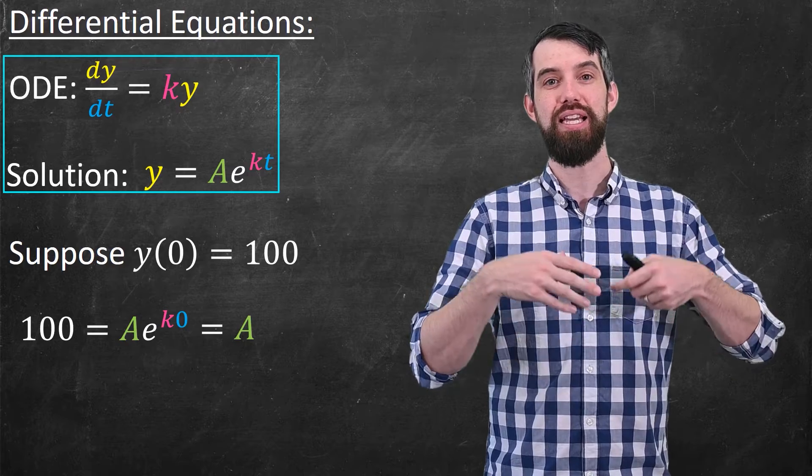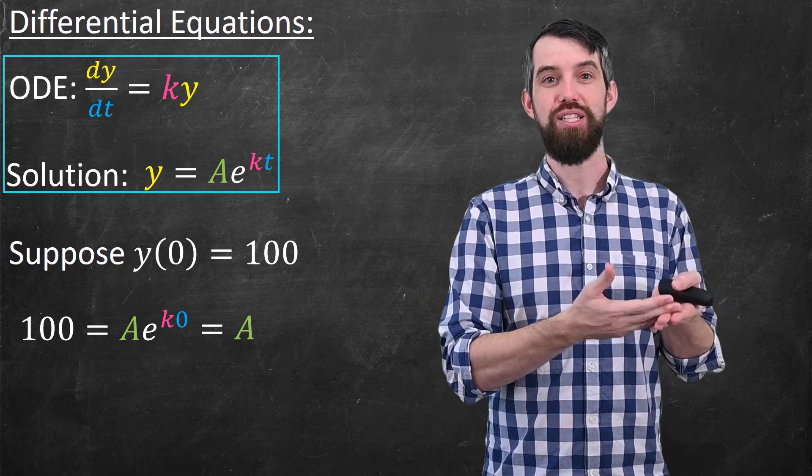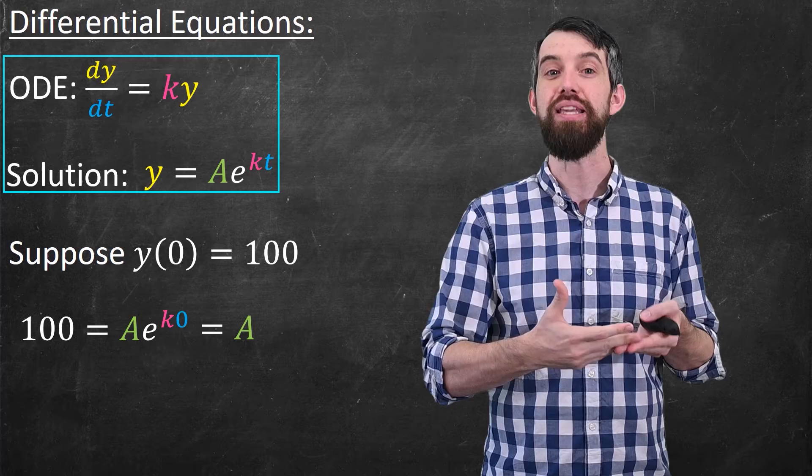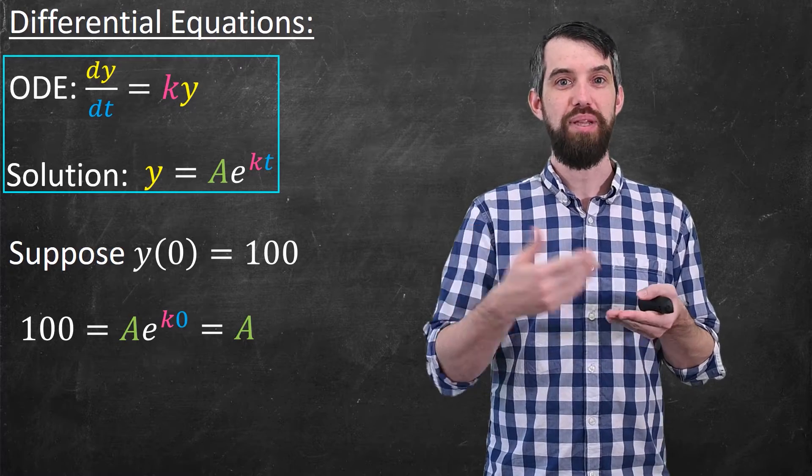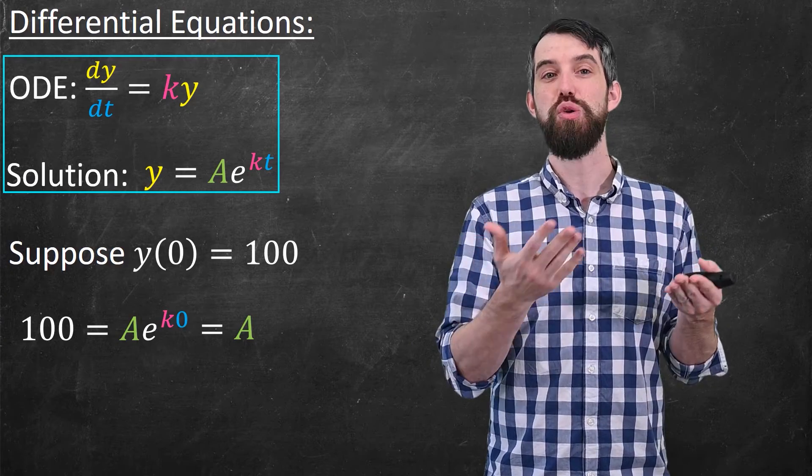Then what I get out of this, if I just plug it in, is that 100 is what happens when you plug in t equal to zero, Ae to the k times zero, and e to the zero is just one, so this will just give me the value of A.